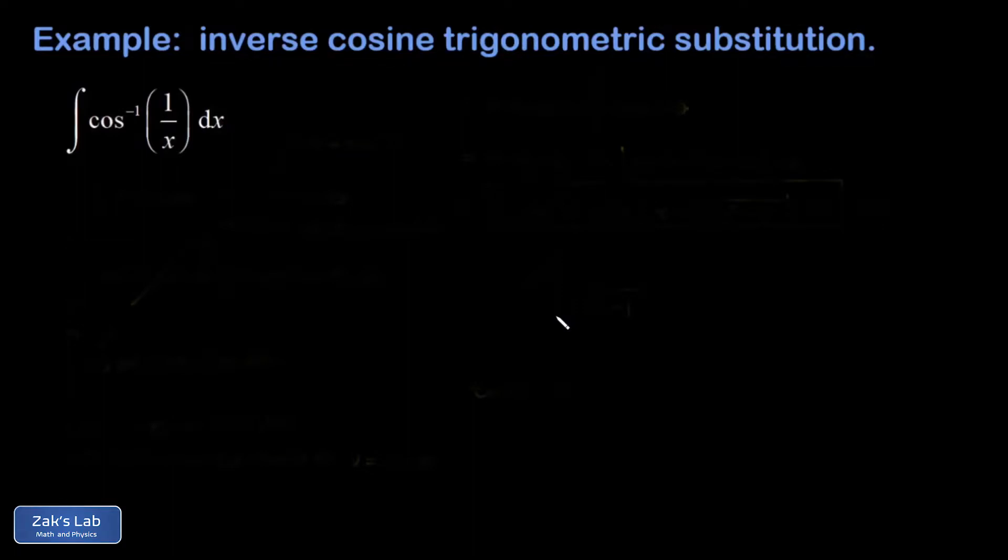In this video, we're going to start by computing the integral of the inverse cosine of 1 over x. This involves a trigonometric substitution followed by integration by parts. Next, we address an interesting complication that happens when you check your answer with a computer algebra system. For example, WX maxima and Wolfram alpha both produce a solution that looks radically different from what you get by hand. And finally, we're going to prove that those two solutions are equivalent.